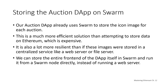Let's talk about storing the auction DApp on Swarm. Our auction DApp already uses Swarm to store the image for each auction. This is a much better and more cost-efficient solution than attempting to store data on Ethereum. We spend gas for everything we store on Ethereum, so storing an image file on the Ethereum blockchain would be extremely expensive. Instead, we want to store those images somewhere else and just have a reference on Ethereum to where those images are located.